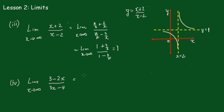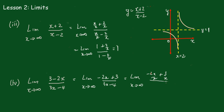Right, now for the next one — what you should have had is the limit. I'm going to rearrange and write that as minus 2x plus 3 over 3x minus 4. Then when we divide by x, that becomes minus 2x/x plus 3/x, all over 3x/x minus 4/x.